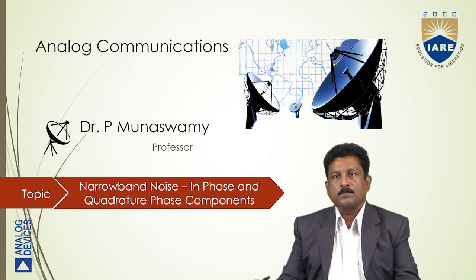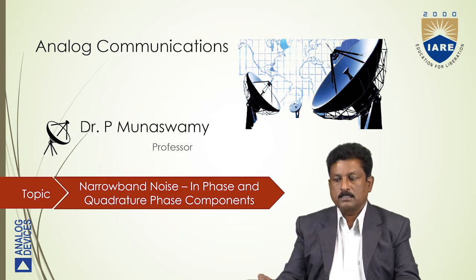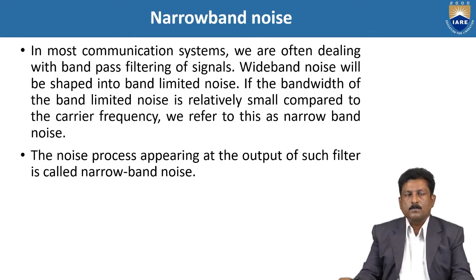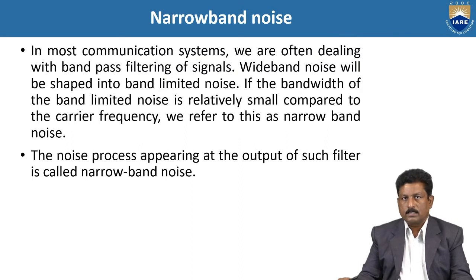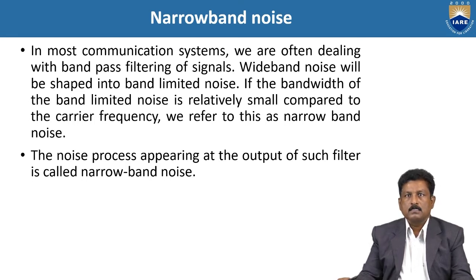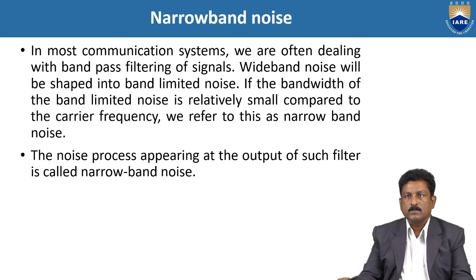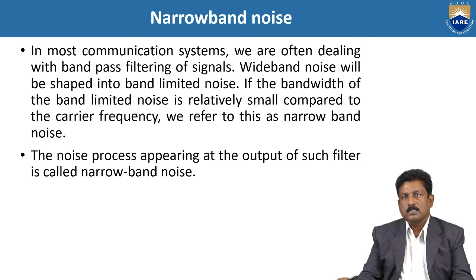Today we will see Narrowband Noise. We are mainly going to concentrate on the In-Phase and Quadrature-Phase components of the Narrowband Noise. In most communication systems, we offer bandpass filtering of the noise. Among this bandpass filter, we pass the wanted signal and reject the unwanted signals. Wideband noise will be shaped into band-limited noise. If the bandwidth of the band-limited noise is relatively small compared to the carrier frequency, we refer to this as Narrowband Noise.